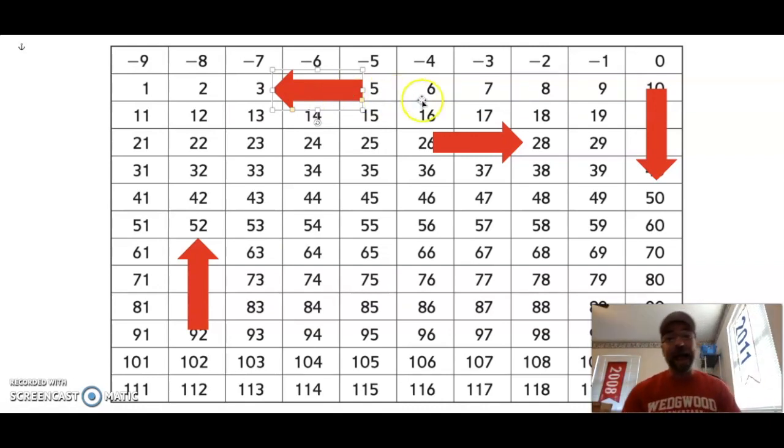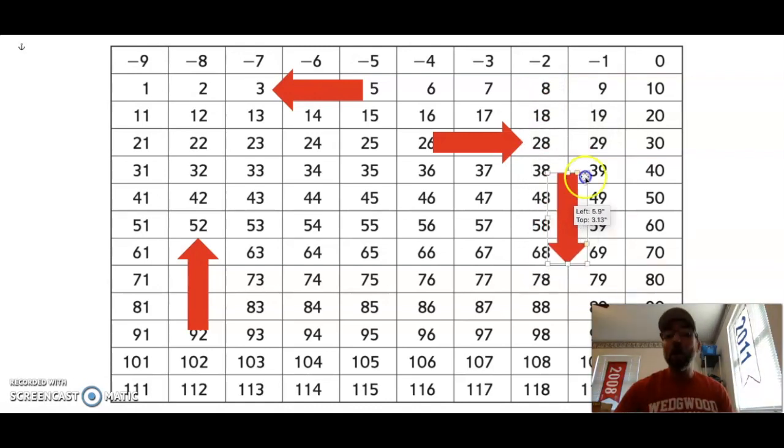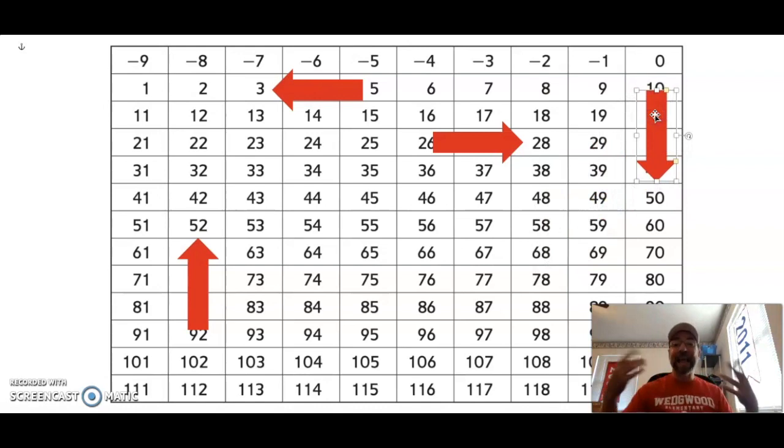Then I have arrows that also point up and down. I'm going to start with the arrow that is pointing down. That arrow that's pointing down adds 10 on our number grid: 30, 40, 50, 60, 70, 80, on and on. So whenever I go down, 48, 58, 68, 78, all I'm doing is adding 10 at a time.